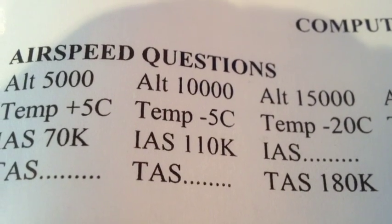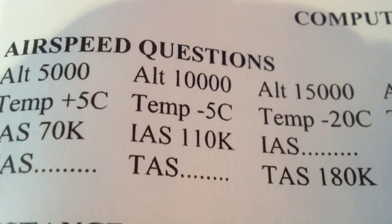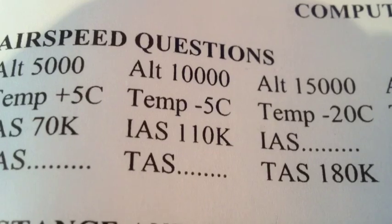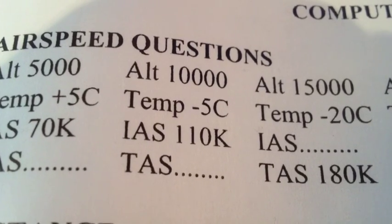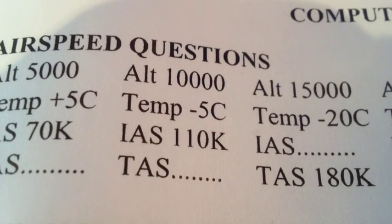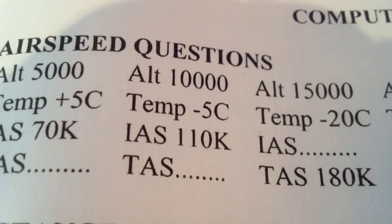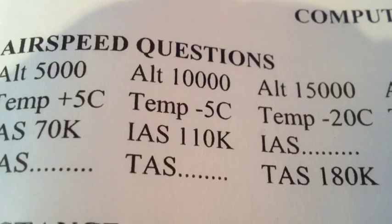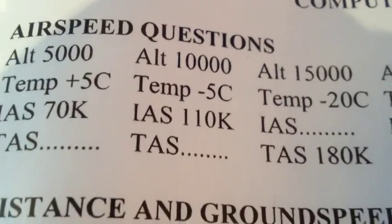Our second question is: given a pressure altitude of 10,000 feet, a temperature of minus 5 Celsius, and an indicated airspeed of 110 knots, what is our true airspeed?